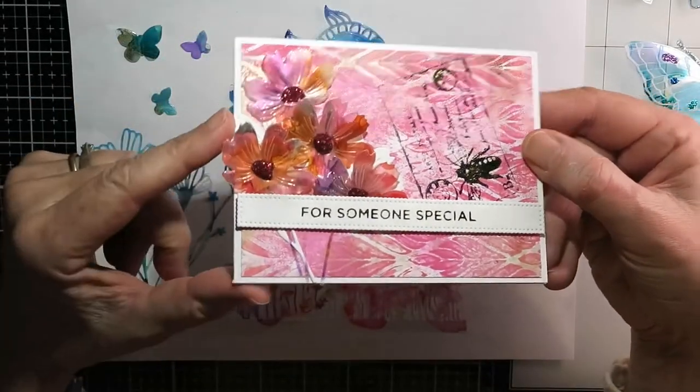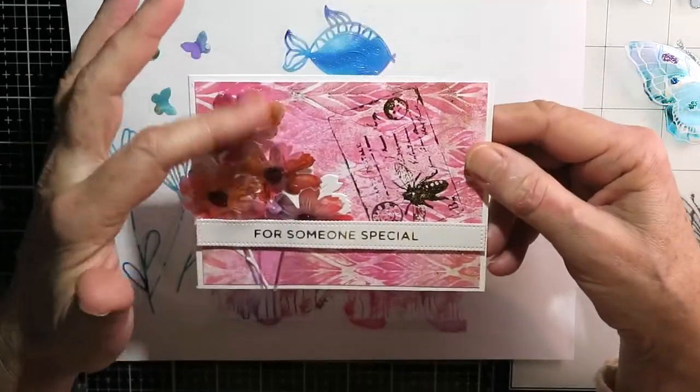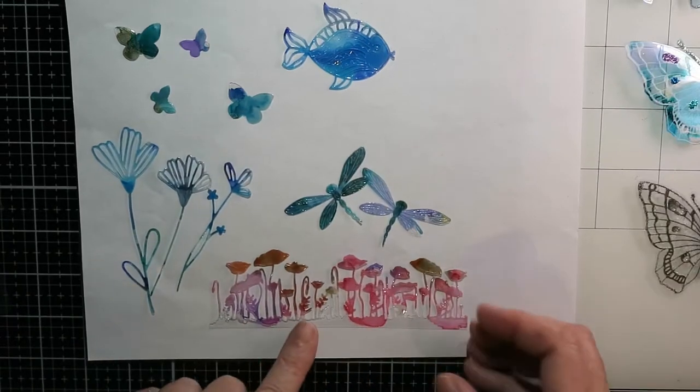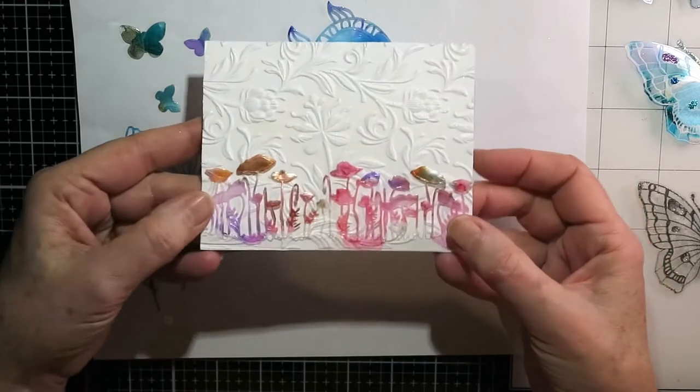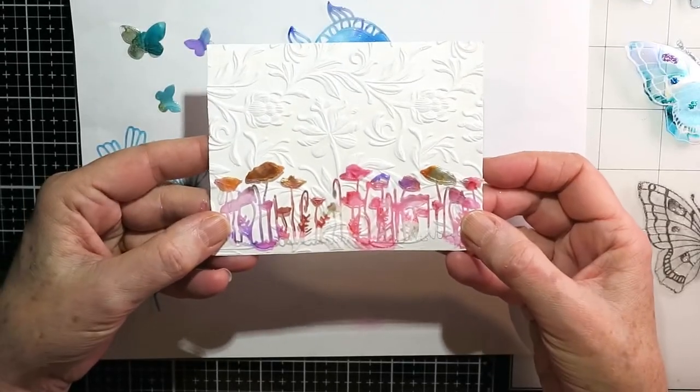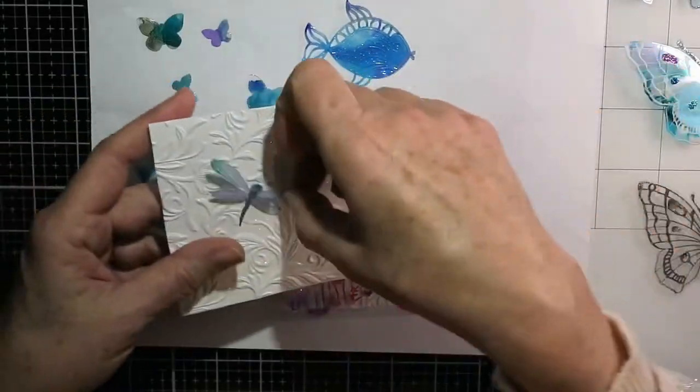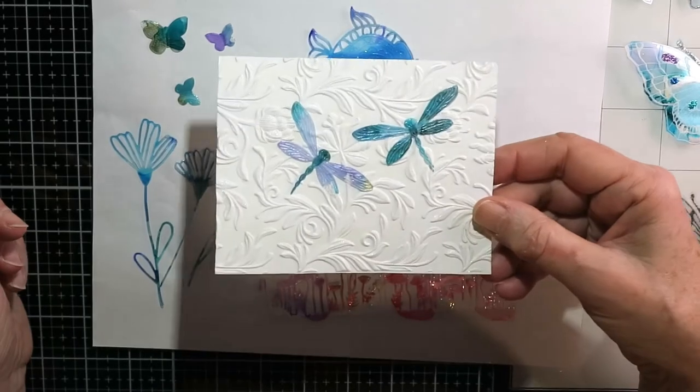So here, it's this one, I've used this Simon Says Stamp Cosmos flower die, and ran it through the die cutting machine. I've also got here a die from Paper Rose. It's called their Poppy Fields, and it was from the same laminating pouch that the Cosmos flower had come from.